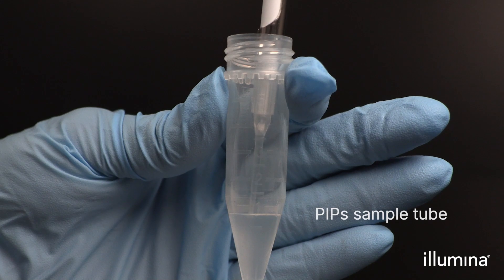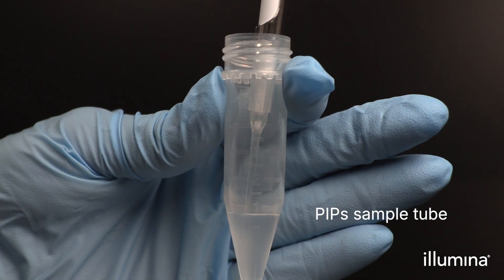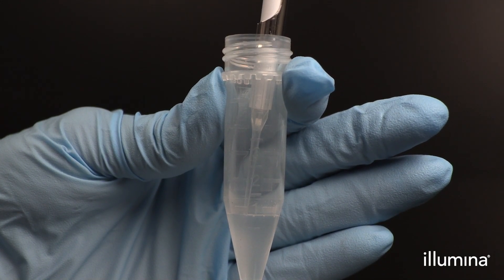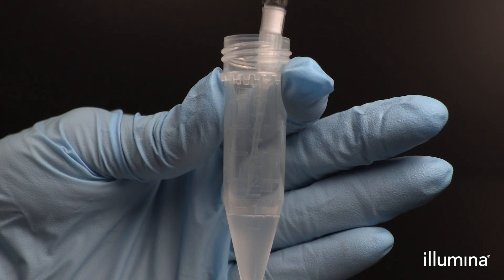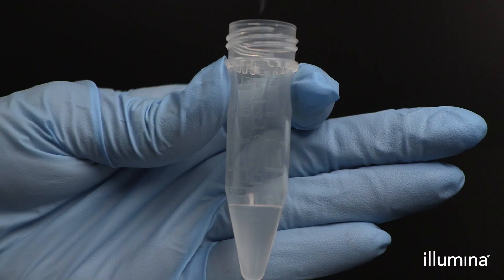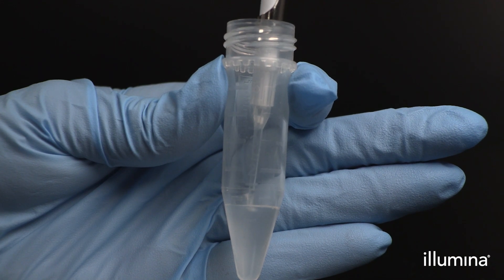Next, add 20 microliters of your freshly mixed sample directly into the PIPs, and not on the surface of the PIPs, plus 160 units of RNase inhibitor.